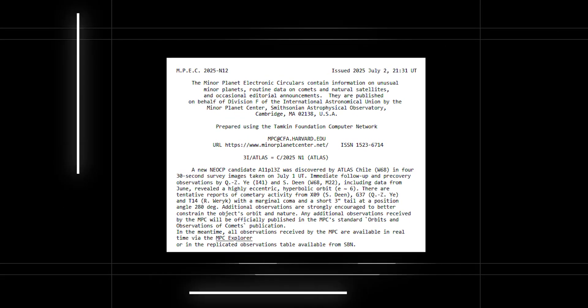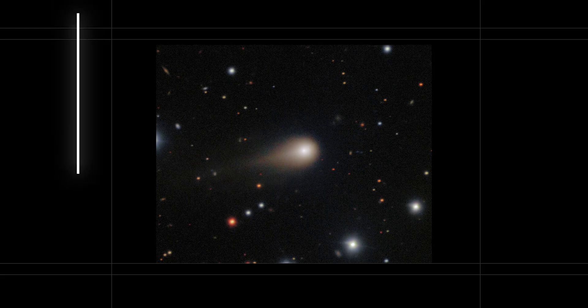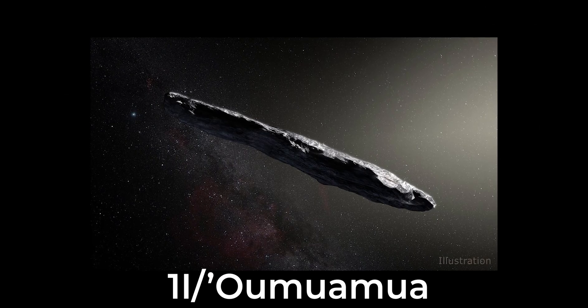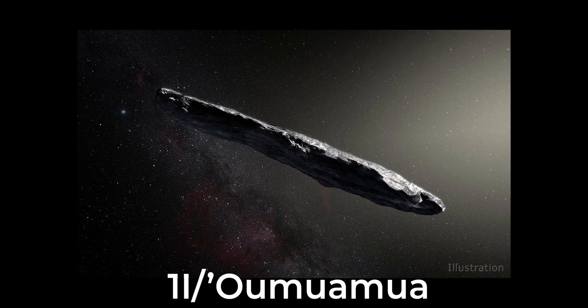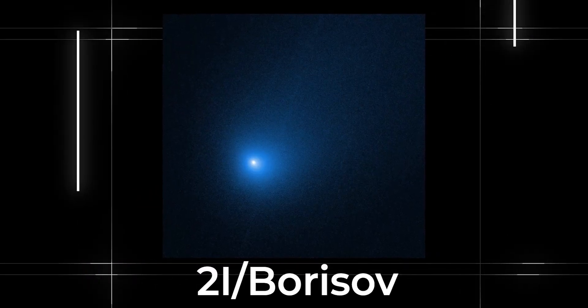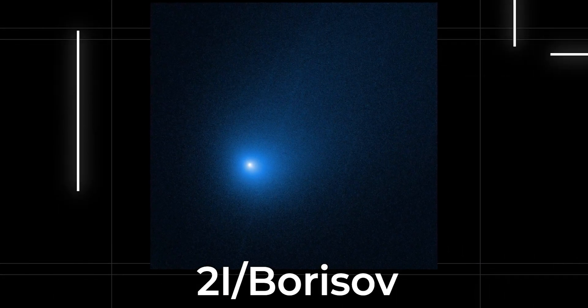By July 2nd, the Minor Planet Center issued the designation 3I Atlas, the third interstellar object ever discovered. Only two others had come before. Oumuamua in 2017, a tumbling, airless shard that showed no tail, and Borisov in 2019, a true comet that behaved just like those born beside our Sun.